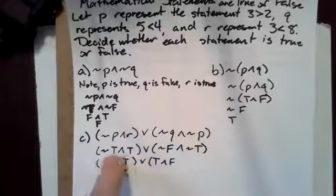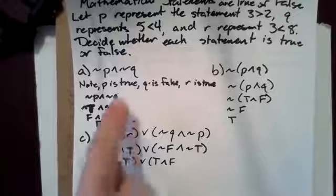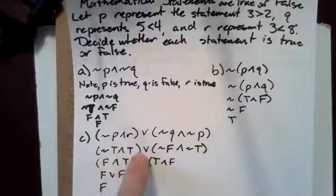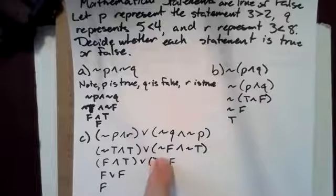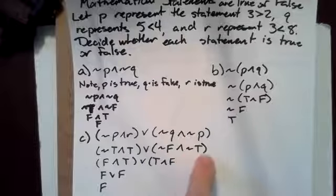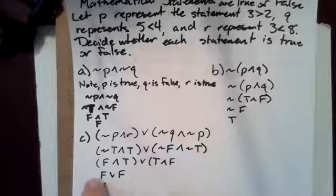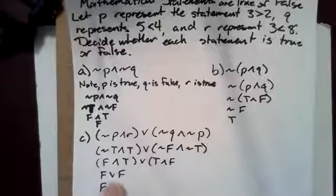So we have not true and true. Since R is true and P is true, that's not true and true, or Q is false, so that's not false and not true. So it's false and true, or true and false, so that's false or false, which is false.